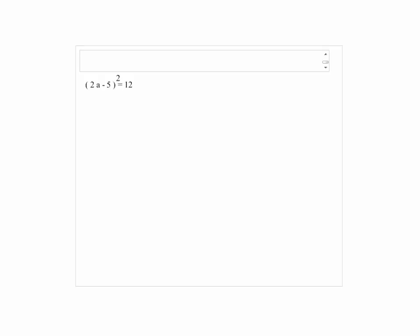Solved by the square root property. 2a minus 5 squared equals 12. So by using the square root property, you're going to take the square root on both sides and make sure you get plus minus in front of the square root of 12.